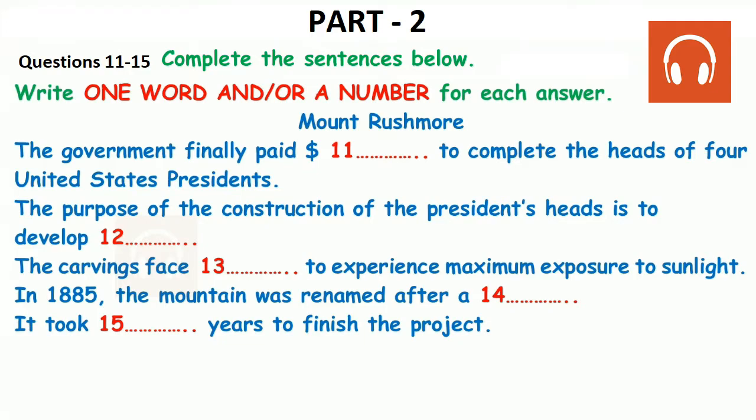The name of Mount Rushmore also has an interesting history. The location was originally known as the Six Grandfathers. However, during an expedition in 1885, the mountain was renamed after Charles E. Rushmore, a prominent New York lawyer who joked that his annual treks to the mountain had earned him the right to have it named after him. Forty years after the mountain was renamed, Charles E. Rushmore donated $5,000 towards the sculpting of the president's heads, the largest single contribution.